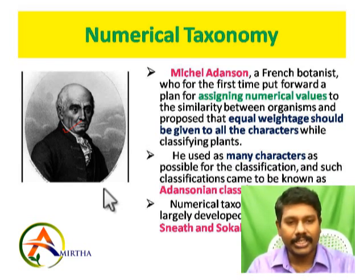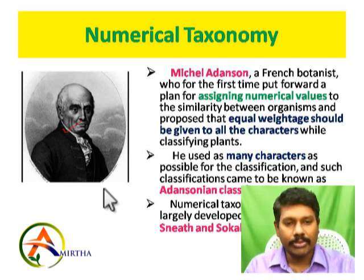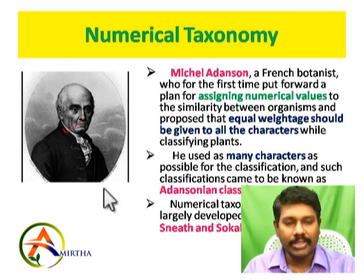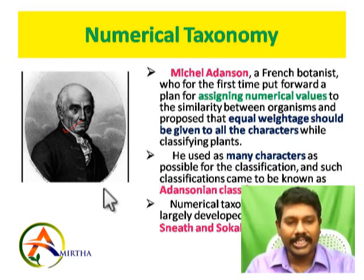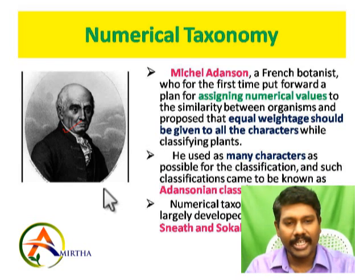The floral characters include Anditium (androecium), Gynetium (gynoecium), Calyx, and Corolla. Especially the reproductive parts — androecium, stamens, and the female reproductive part, ovules — are individual characters. Any character with similarity gets a plus value, and any character that is different gets a minus value.